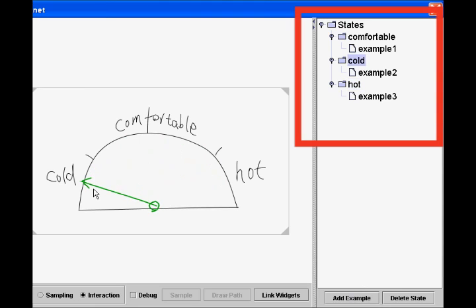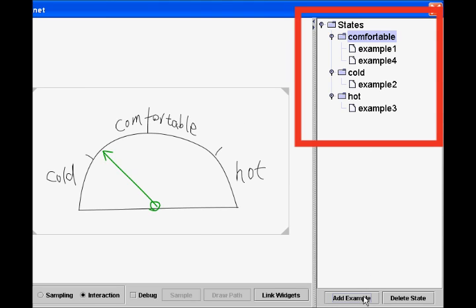Every time the needle is moved, the system automatically identifies the state of the widget. If the identified state is incorrect, a designer can correct it by selecting the correct state and add the misclassified example to that state. This will let the system refine the classification by retraining itself based on new examples.